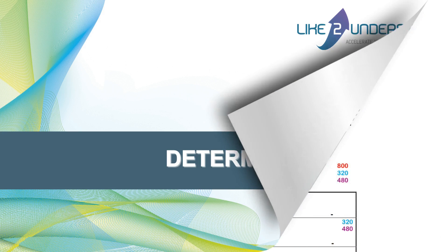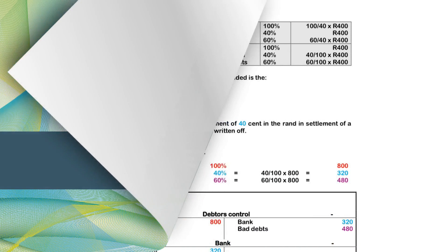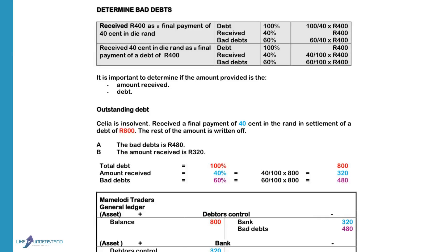Good morning, we will pay attention to bad debts today. Receive 400 Rand as a final payment of 40 cents in the Rand. If the person paid the total debt he would pay 100%. The business only received 40% of the debt and 60% must be written off as bad debts.